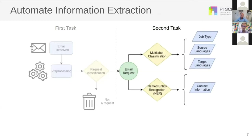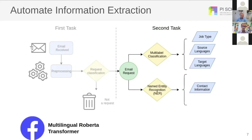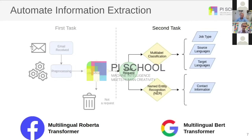With these two approaches, we can detect the job type, the source and target languages, and also extract contact information from those emails. For this project, we used the multilingual RoBERTa transformer from Facebook and also a multilingual deep learning model from Google.